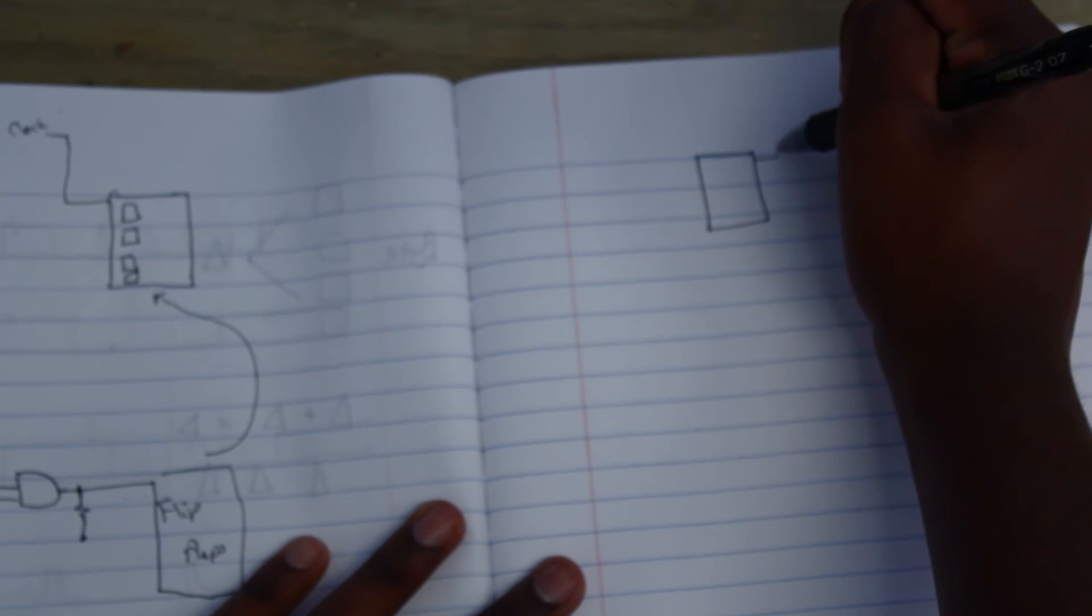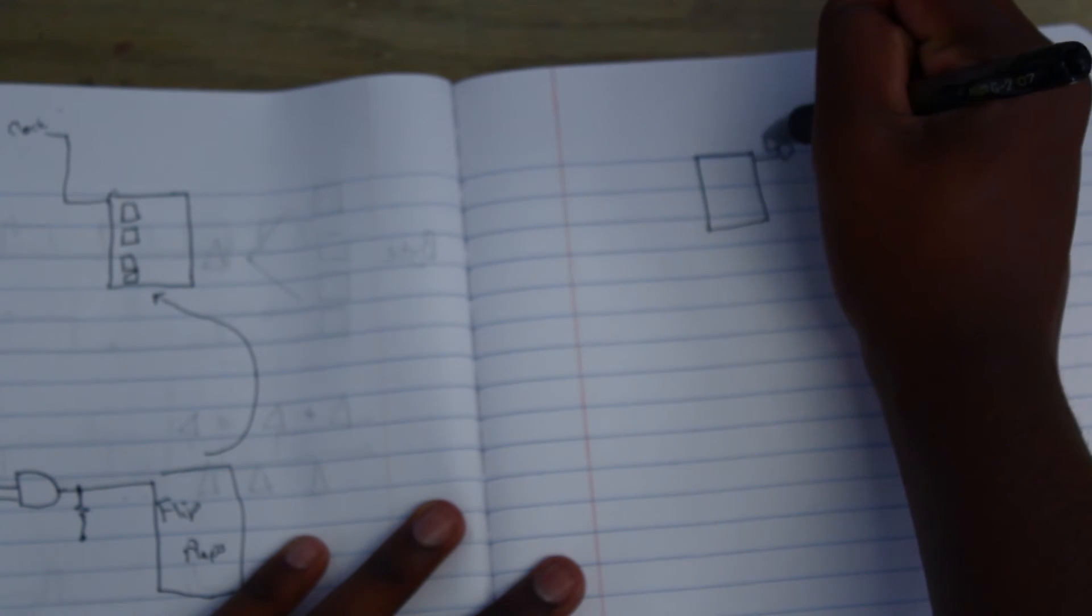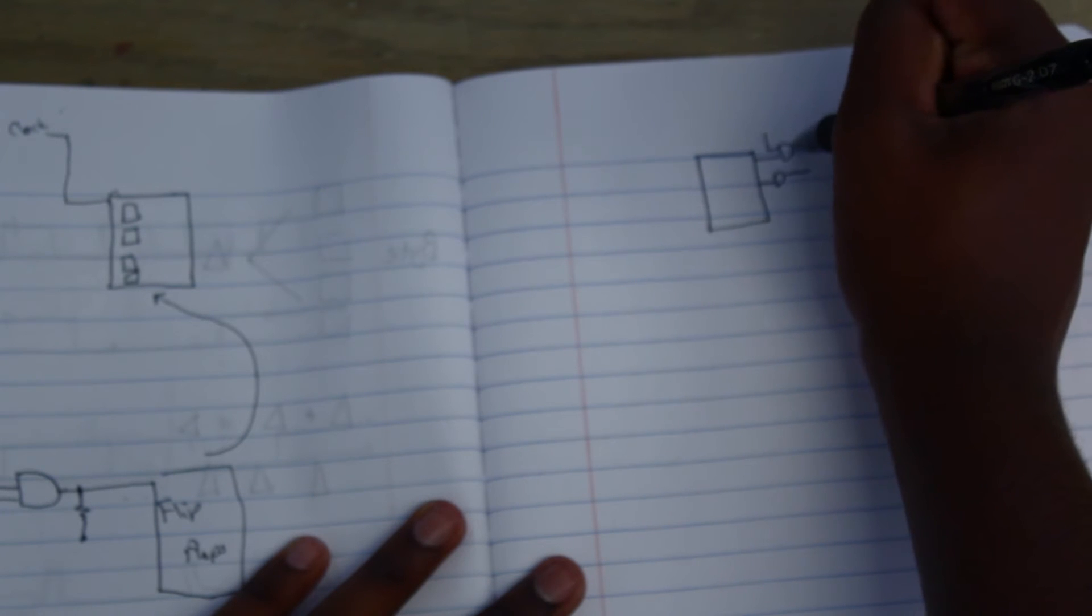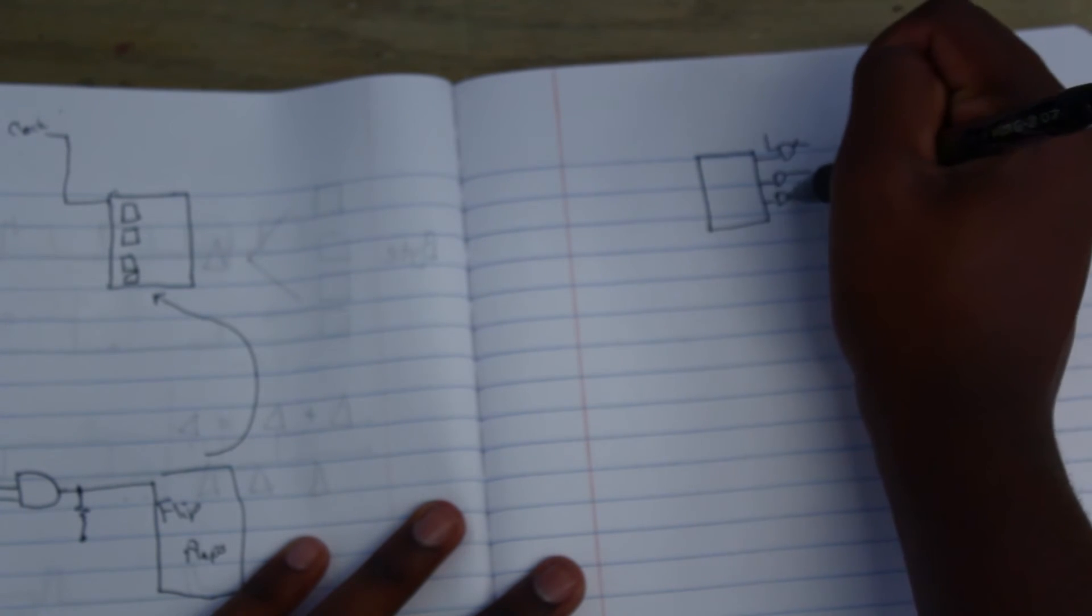Okay. So, the first bit has its own AND gate. The second bit has its own AND gate. Third has its own AND gate. And fourth has its own AND gate.